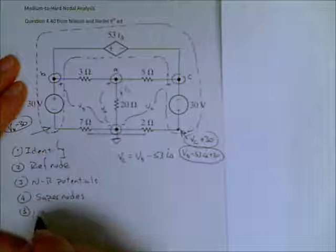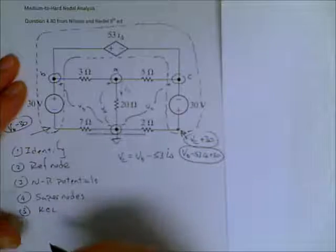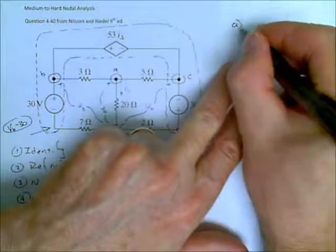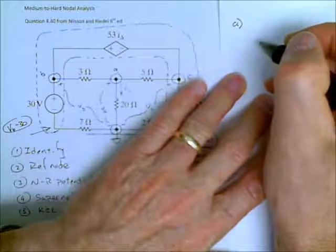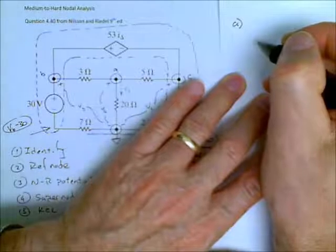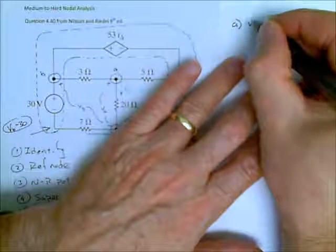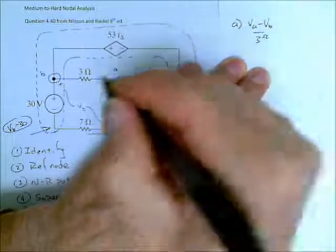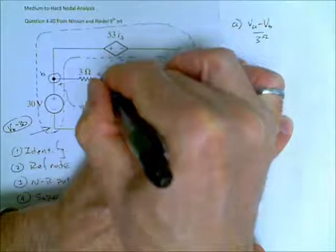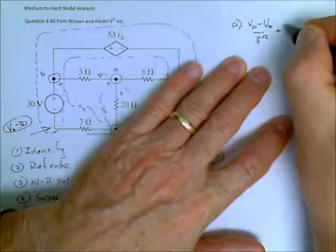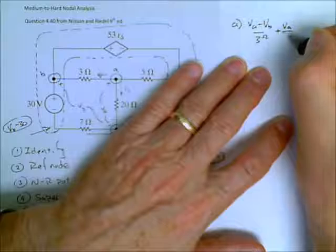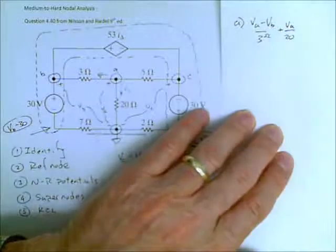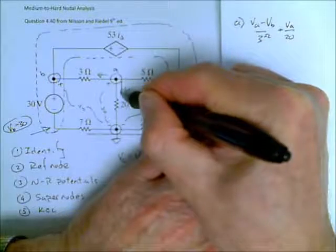And number five, it's KCL. So, let's go over here and write our KCL equations. Let's start at A. KCL at A, there are three connections to A. Therefore, there are going to be three terms. It's VA minus VB over three ohms. That is the current in this direction. Plus VA over 20. That is the current I delta, which is the current down through here.